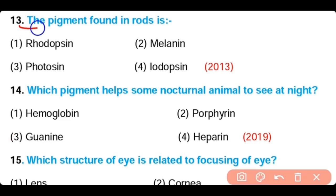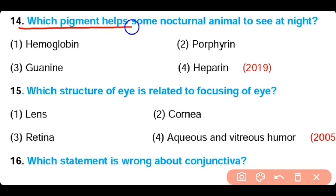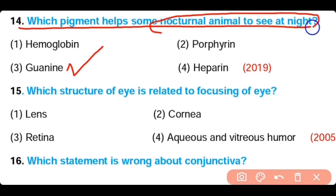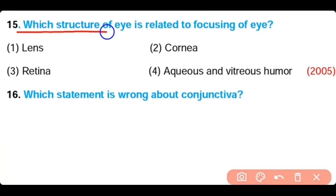Question number thirteen: The pigment found in the rods is (a) rhodopsin, (b) melanin, (c) photopsin, (d) iodopsin. The answer is option one — rhodopsin is a pigment present in rods. Question number fourteen: Which pigment helps some nocturnal animals to see at night? (a) hemoglobin, (b) porphyrin, (c) guanine, (d) heparin. The answer is option three — guanine is a pigment present in some nocturnal animals that helps them see at night because it provides a mirror-like surface known as tapetum.